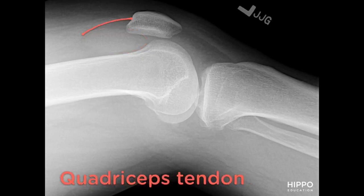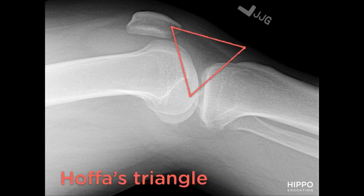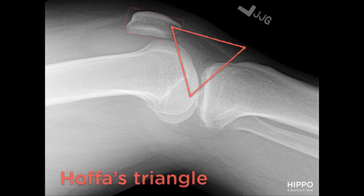Depending on the severity of the knee effusion, you may see bowing of the quadriceps tendon as well as blurring of the posterior border of the quadriceps tendon by the effusion. Depending on the severity of the knee effusion, you may see fluid density in Hoffa's triangle, as you can see here, and the patella may be anteriorly displaced.